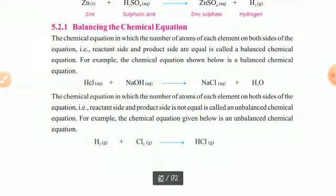A balanced chemical equation is one in which the number of atoms of each element on both sides of the equation — the reactant side and the product side — are equal. For example, if one hydrogen atom is used in the reactants, then one hydrogen atom is also available in the product. The chemical equation shown below is an example of a balanced chemical equation.